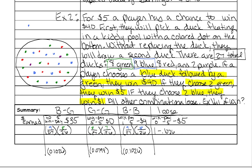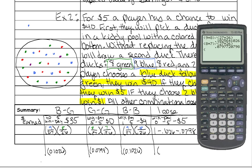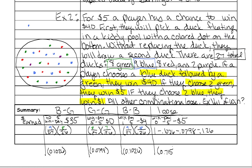So now we subtract all that from 1 to give us the probability of losing: 1 minus 0.1026 minus 0.0798 minus 0.1026, which gives us 0.715 for the probability of losing.